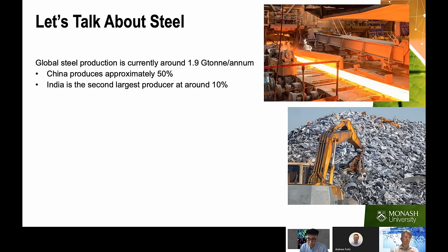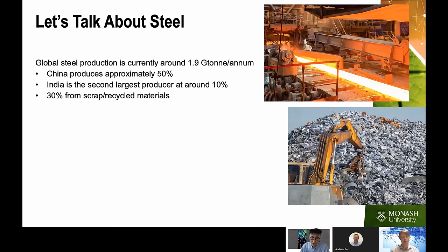Steel is 100% recyclable — we can take a lump of steel and recycle it into an equivalent product with the same properties. However, only around 30% of global steel comes from scrap or recycled materials. The reason is straightforward: we don't have sufficient supplies of scrap to satisfy current demand. We have such increased demands for steel that we need to get more steel into the system rather than relying solely on recycling existing stocks.